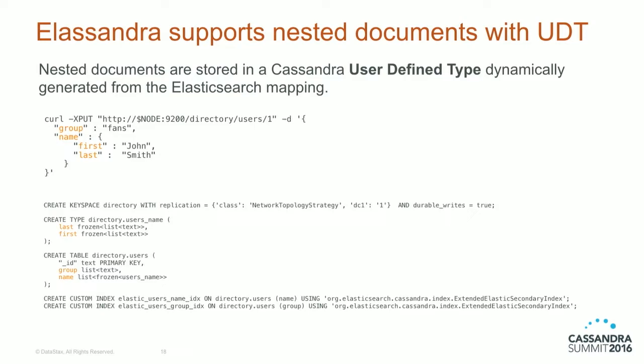For nested documents from Elasticsearch, we use user-defined types dynamically generated from the Elasticsearch mapping. It is recursive, so you can have many layers of nested documents. For example, a name field with first and last subfields generates the corresponding Cassandra UDT in the schema. You can also see that there is a custom secondary index for each top-level field in the user table, which is where all documents for the document type 'user' are stored.